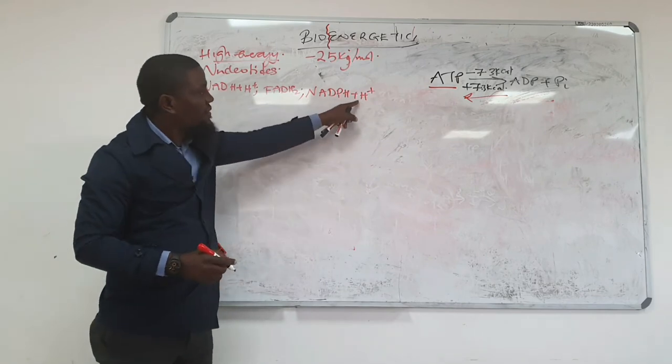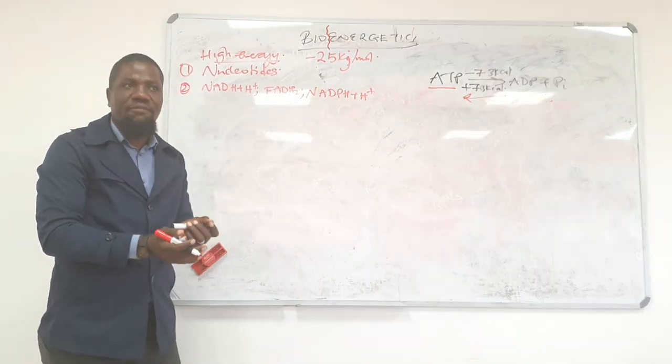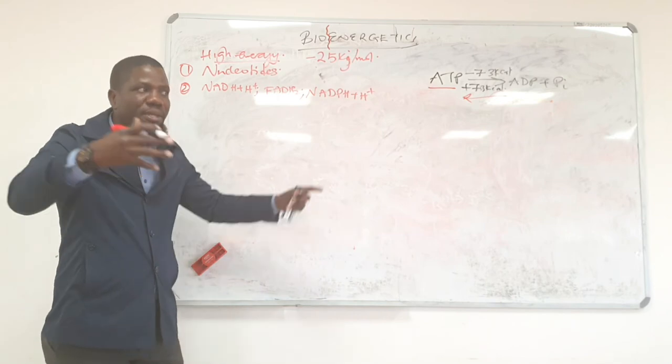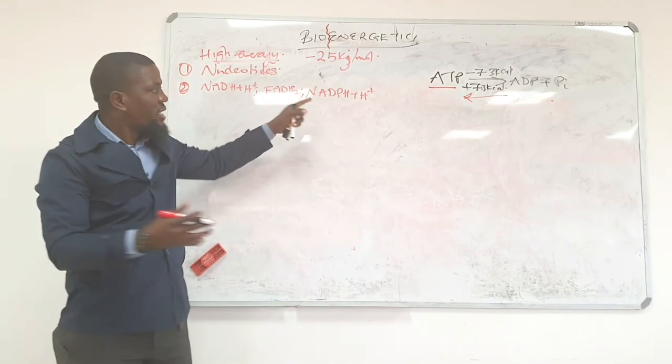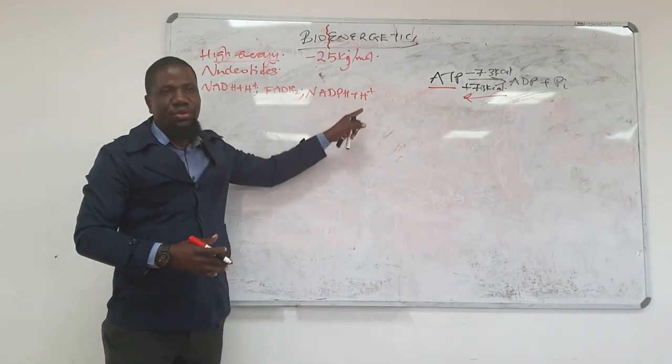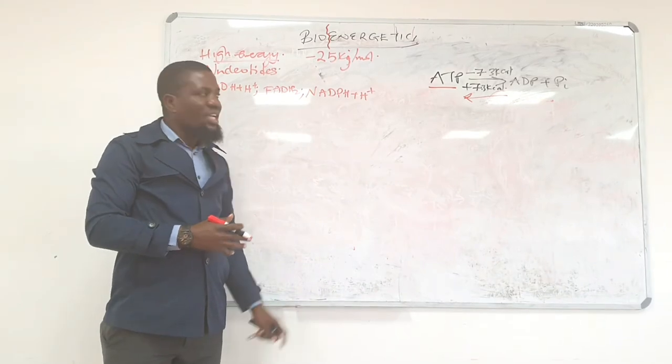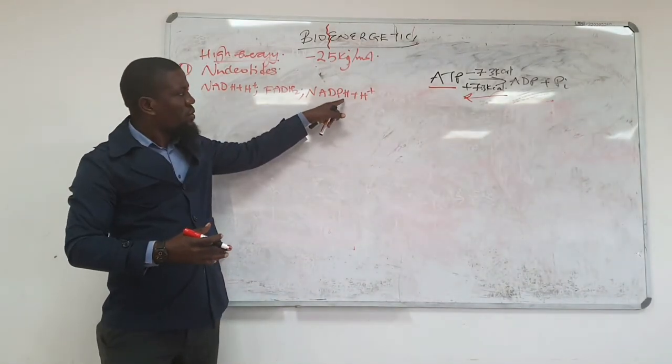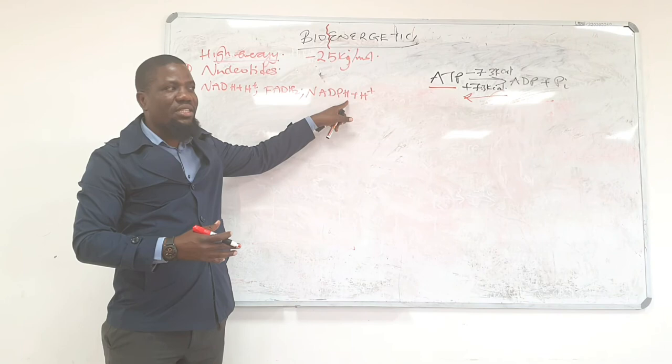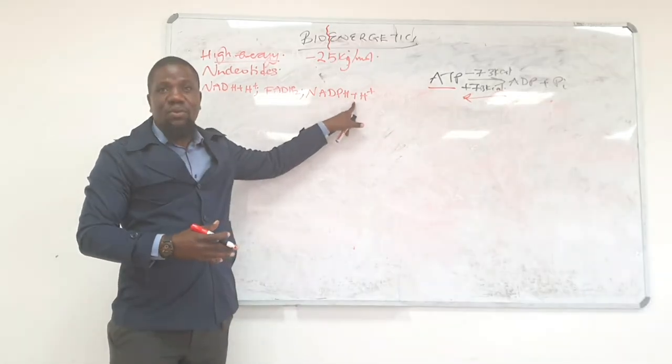This will be giving hydrogen to a growing fatty acyl chain, fatty acid. As it's growing, as it's being made into a long chain, it's sequentially getting hydrogens. So just go to the notes, to the discussion on fatty acid synthesis, you'll see that this is exactly what happens.